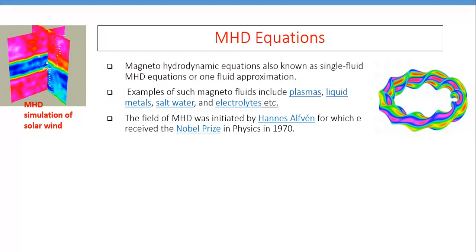The field of MHD was initiated by the well-known famous scientist Hannes Alfvén, for which he got the Nobel Prize in Physics in 1970.